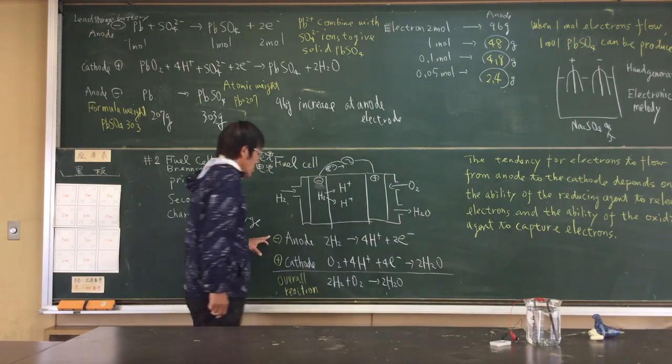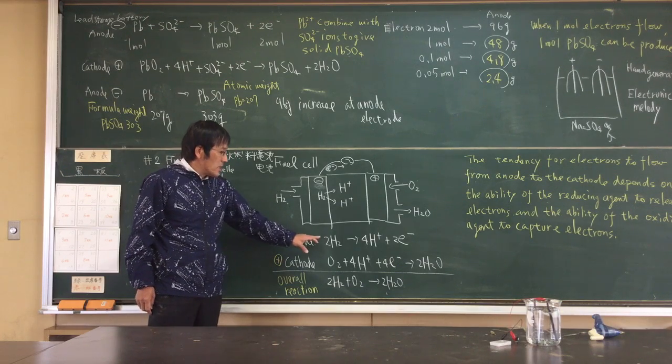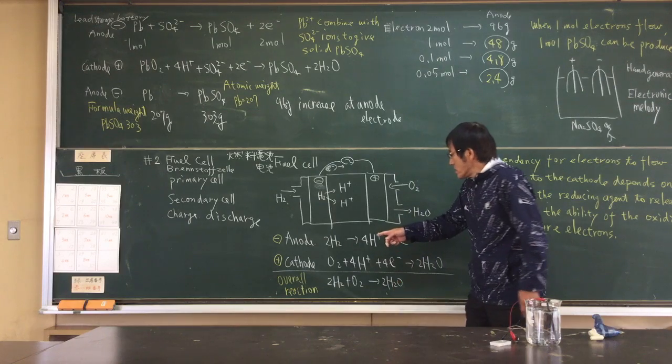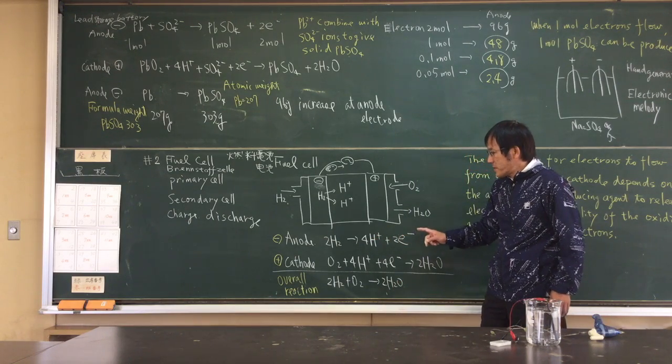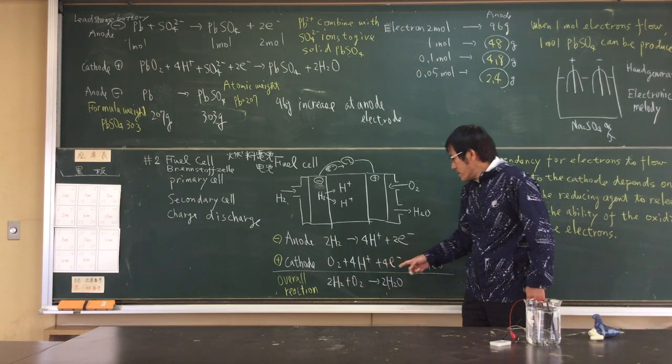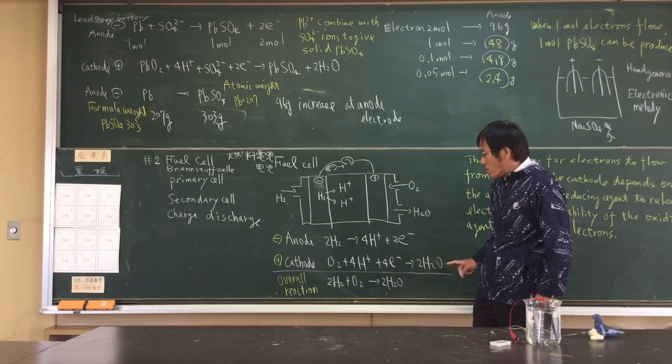At another electrode, hydrogen is oxidized to the product. At the cathode, oxygen is reduced to water.